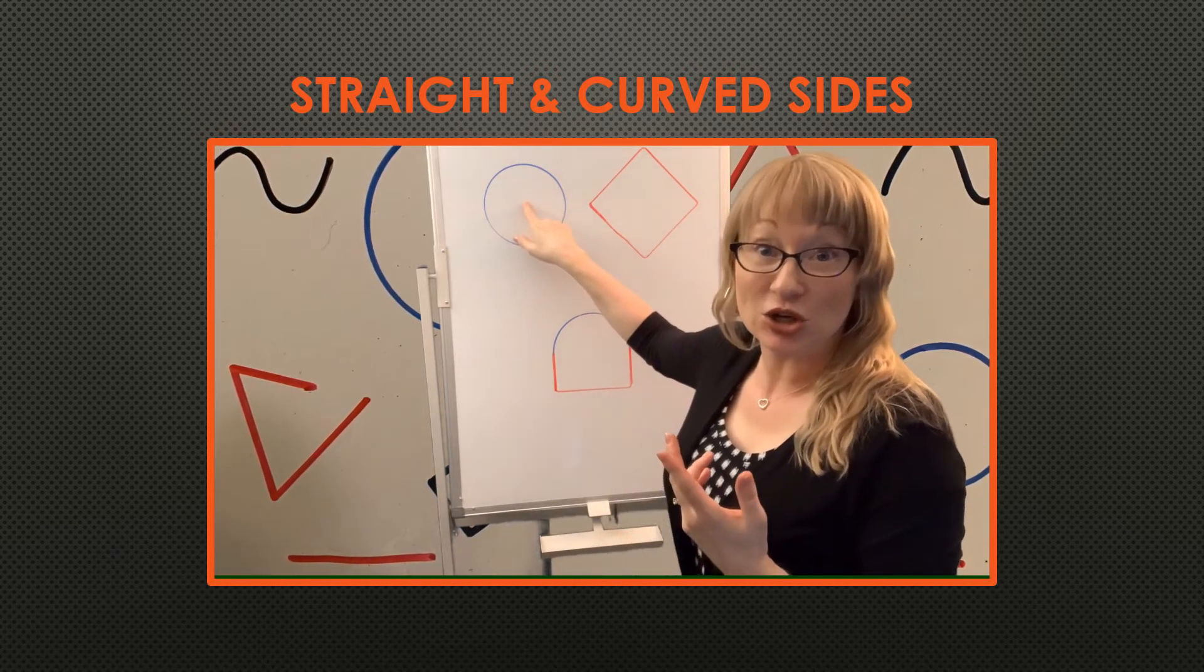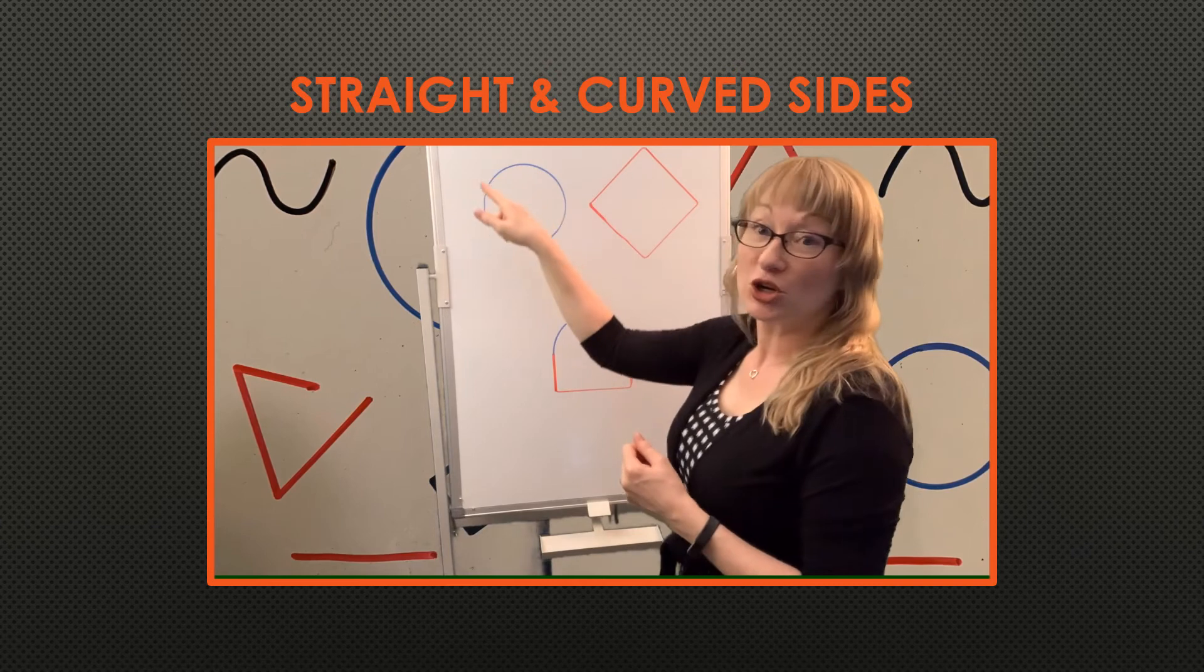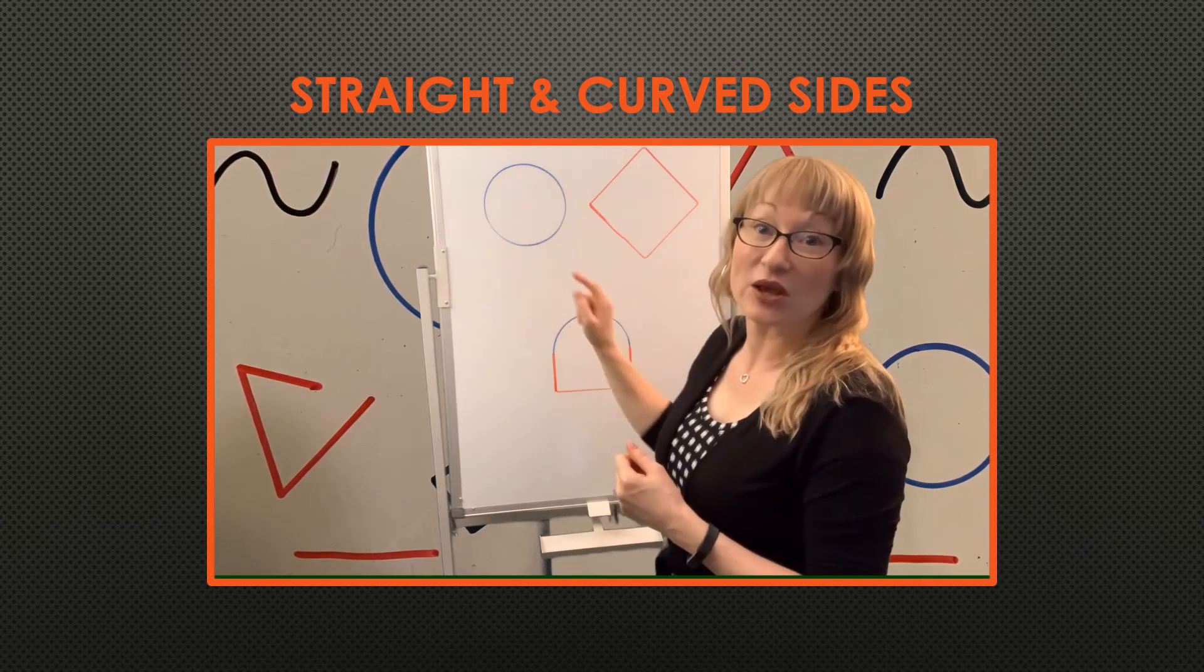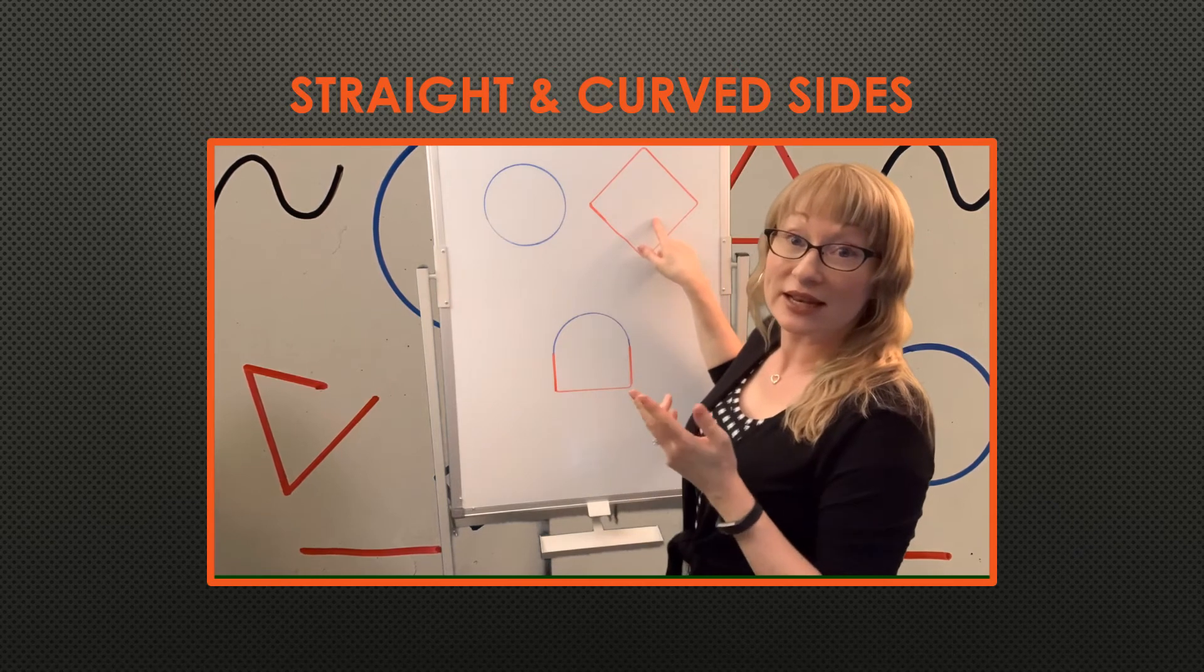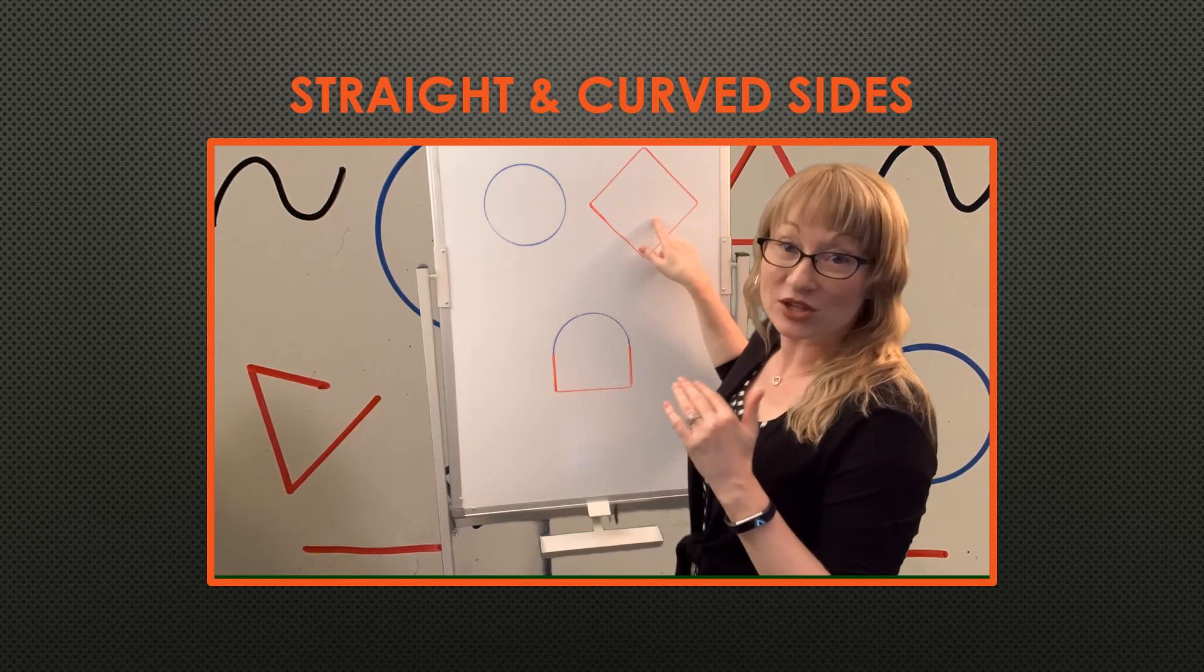This, of course, is a circle. It has one curved, continuous line that goes around. This one is a square, and it has all straight lines on all sides.